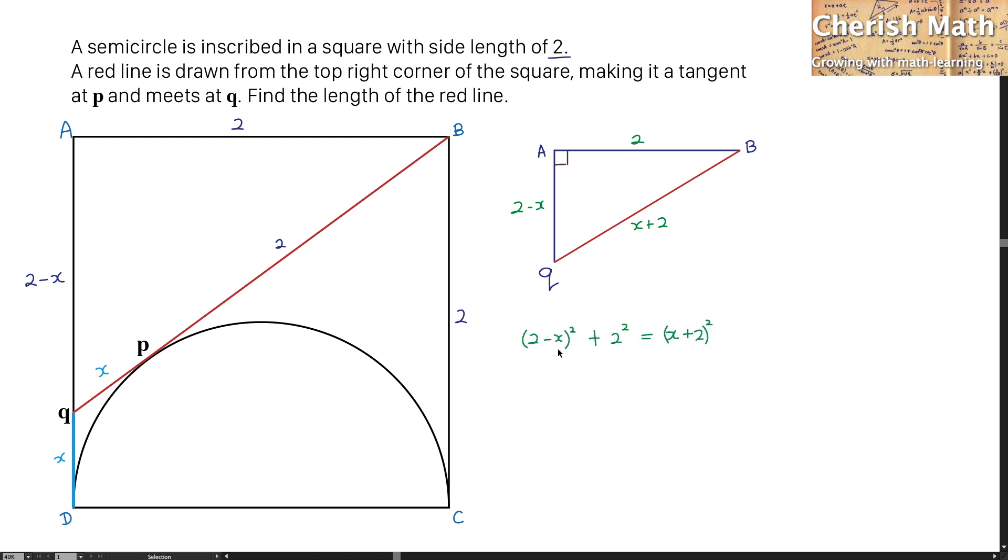I start with the Pythagorean theorem. Expand it. This is what I get. I'm going to simplify. This is gone. X squared is gone. The value of X that I'm going to get here is 1 half.